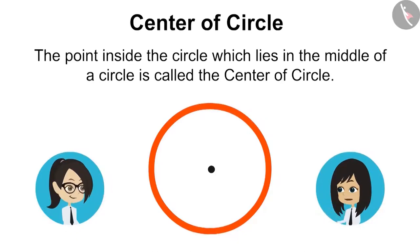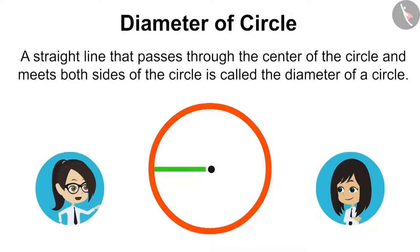Now can you talk about diameter? A straight line that passes through the center of the circle and meets both sides of the circle is called the diameter of circle.